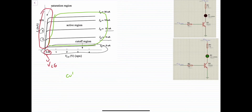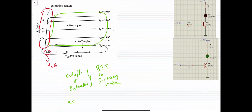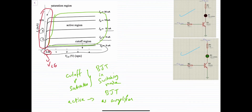The cutoff and saturation regions form the BJT in switching mode, while the active region forms the BJT as an amplifier. Cutoff and saturation are used in digital electronics for switching purposes, while amplification is used in analog applications. Here is an example for switching mode.